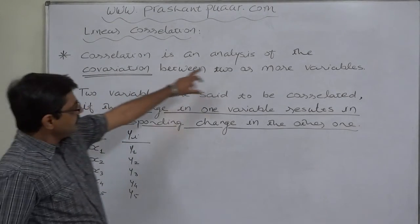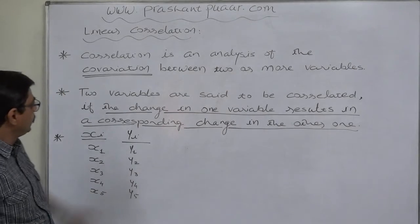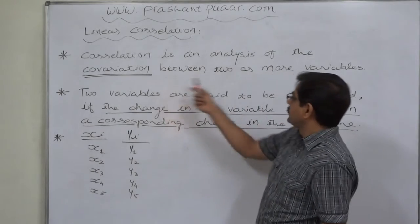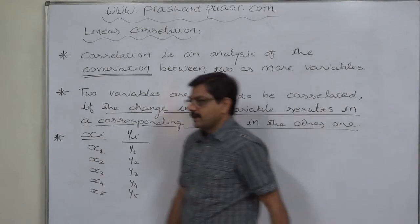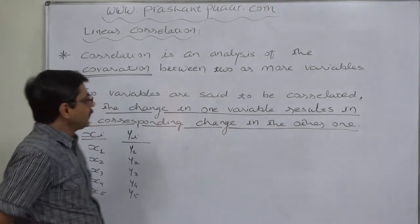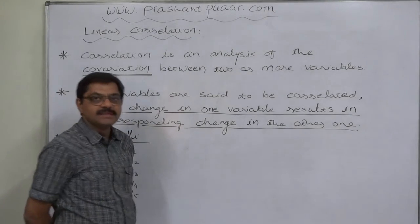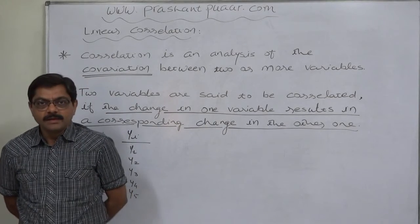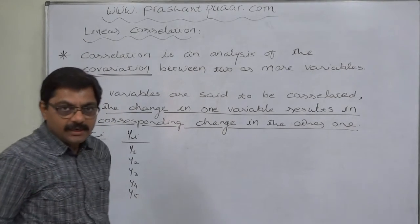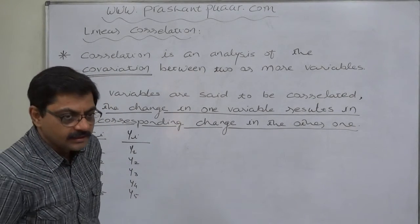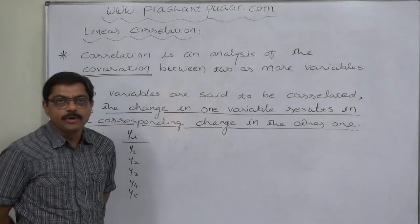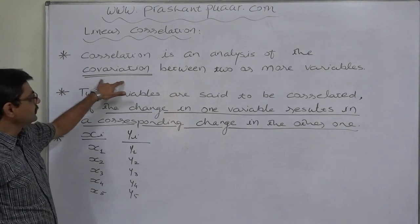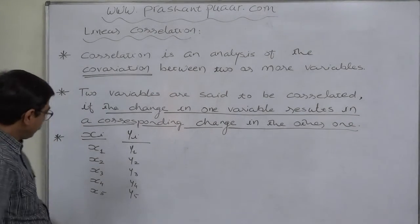Correlation is an analysis of the covariation between two or more variables. Now what do we mean by covariation? Covariation means simultaneous change. When two or more variables change simultaneously or take different values at the same point of time, we know that behavior as covariation.